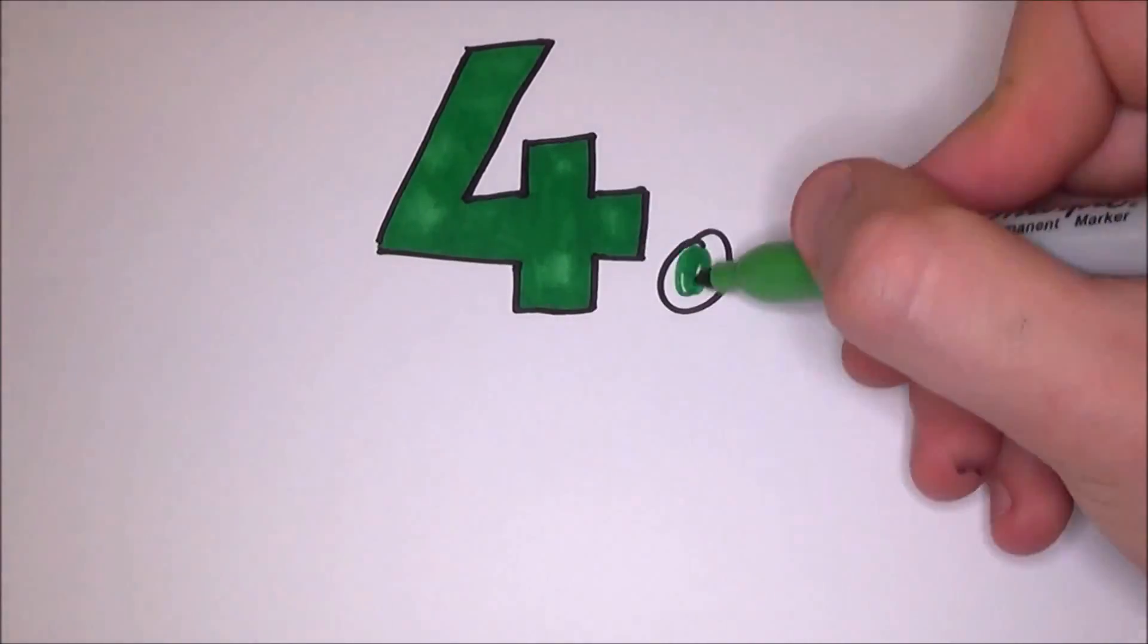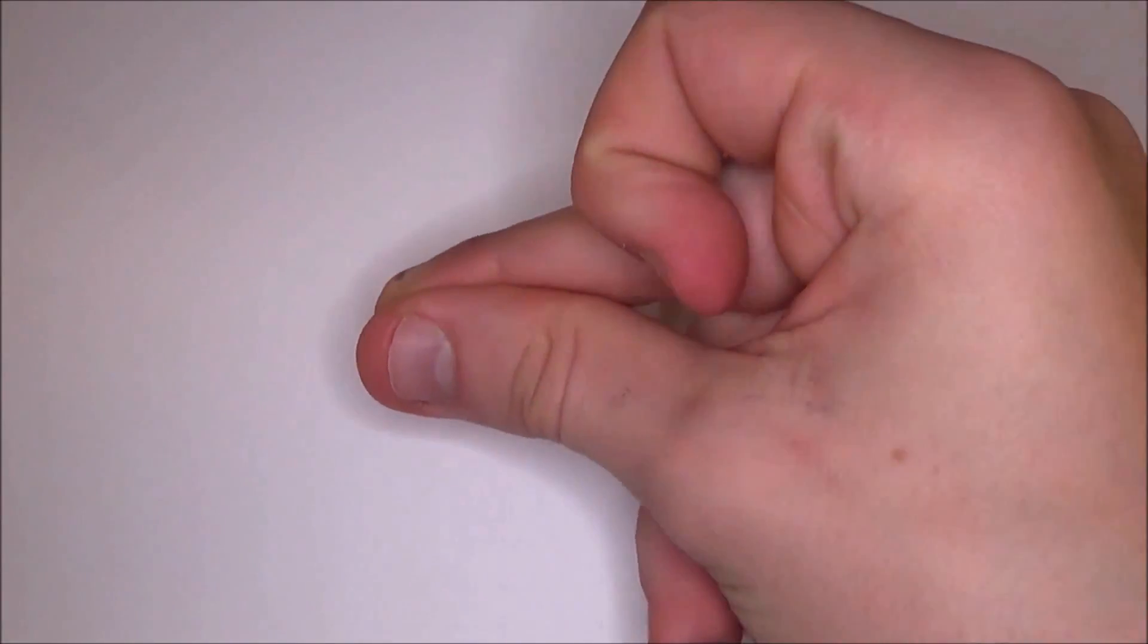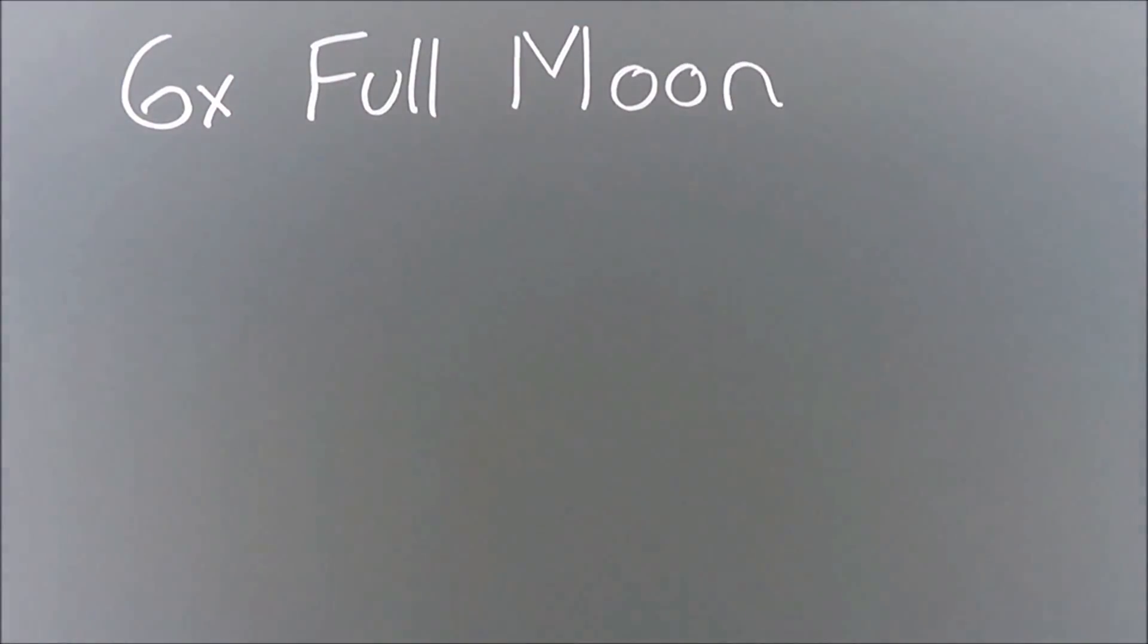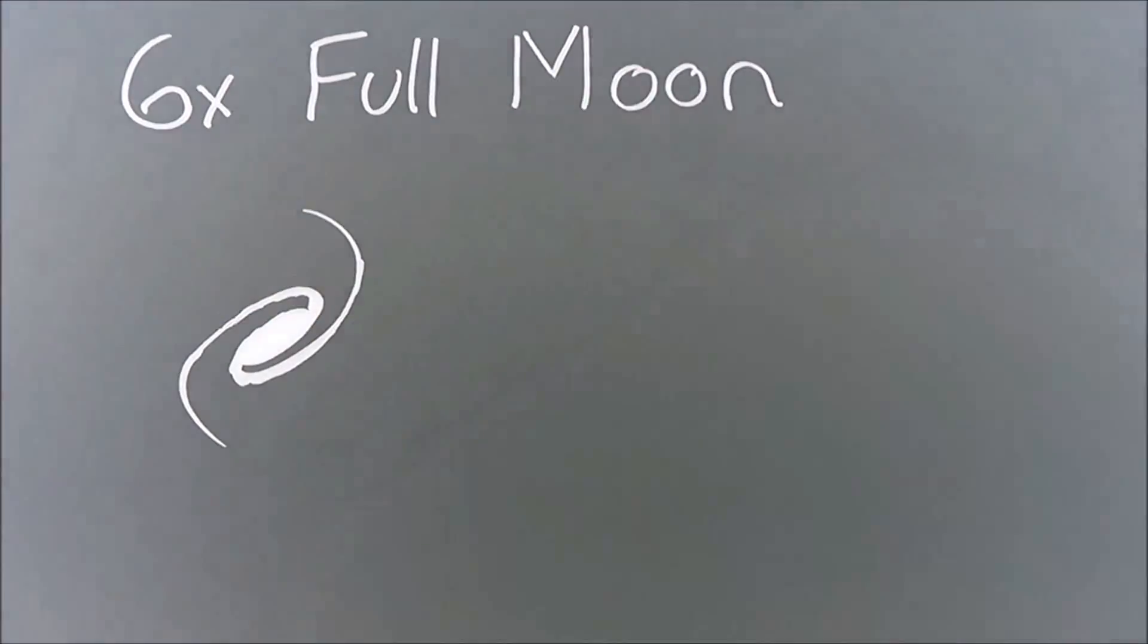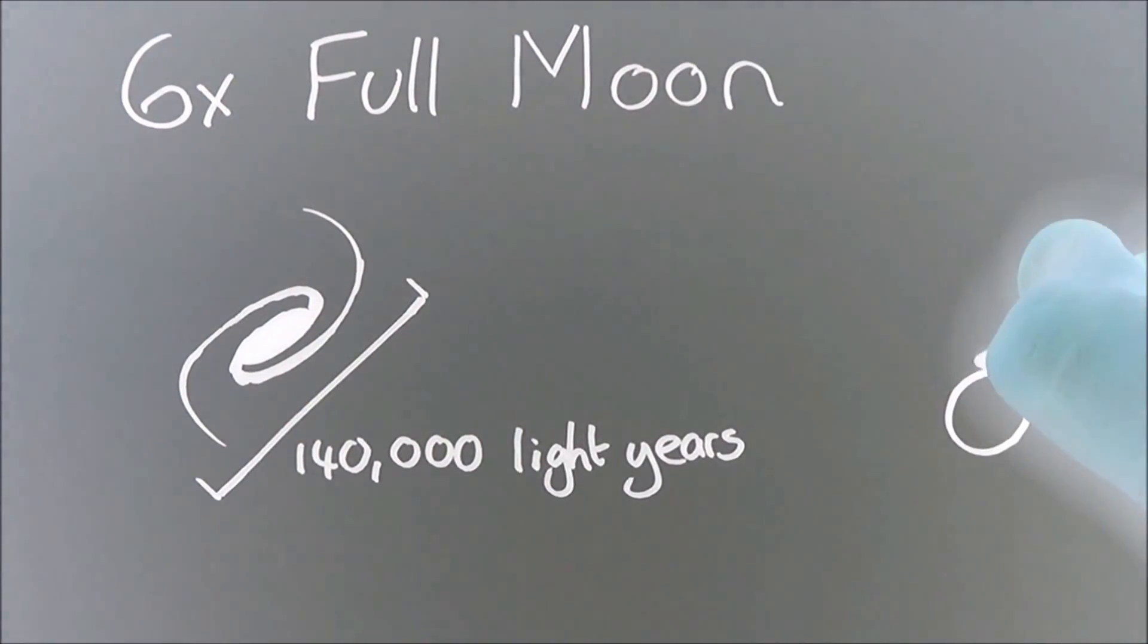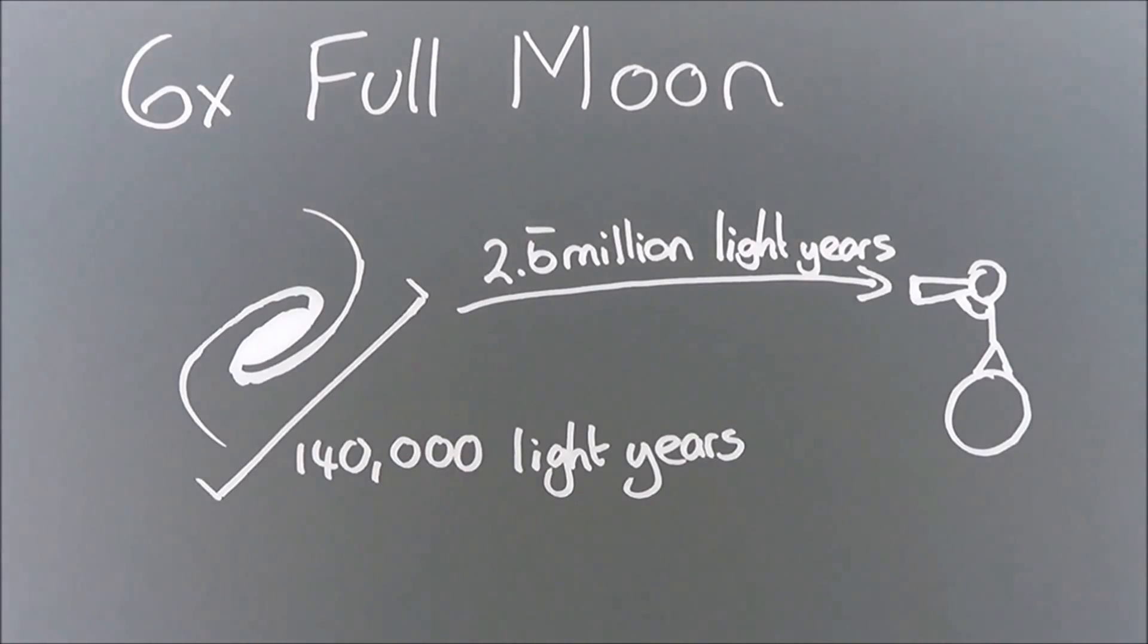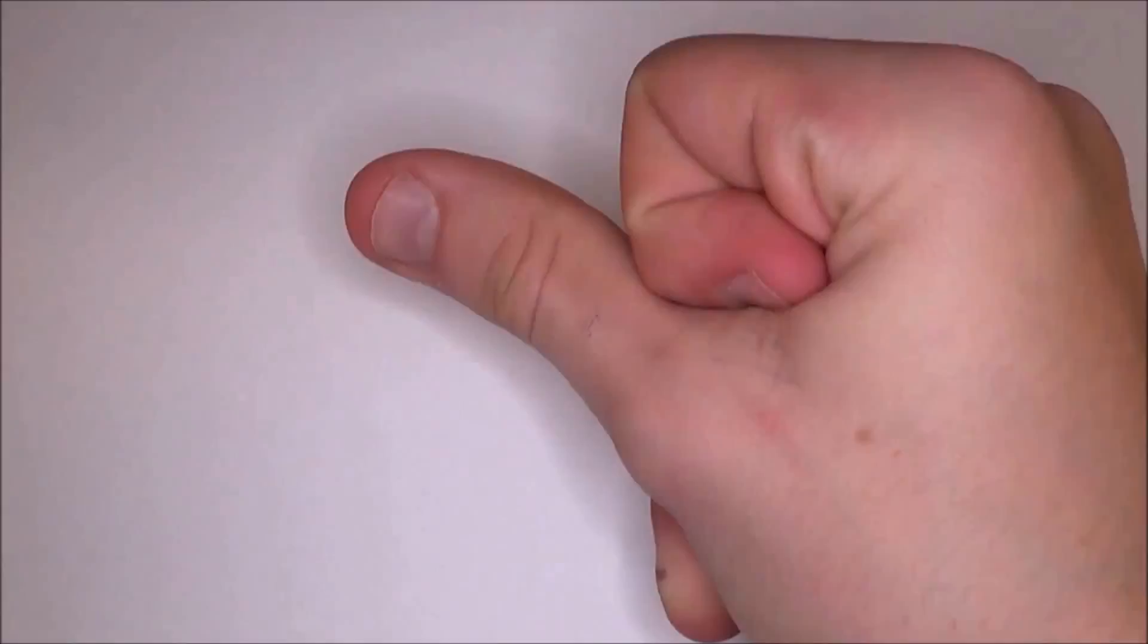Number 4. Super Bright Andromeda. While we can't actually see the Andromeda galaxy very well with our own eyes, it kind of looks like every other star, but maybe slightly blurry. If it was brighter, it would dominate the night sky being 6 times larger than a full moon. It is about 2.5 million light years away and about 140,000 light years across, and it's heading straight for us. In about 4 billion years, we are set to collide.